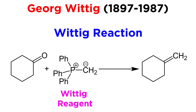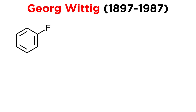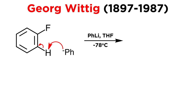Though we may be more familiar with Nobel Prize winning German chemist Georg Wittig from the reagent and accompanying reaction that bears his name, he discovered some other interesting chemistry as well. In 1940, Wittig was examining a reaction involving fluorobenzene and phenyl lithium. Phenyl lithium is a very strong base, strong enough to abstract this alpha proton to produce the carbanion.